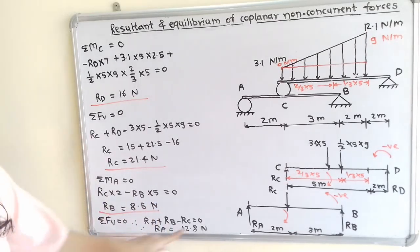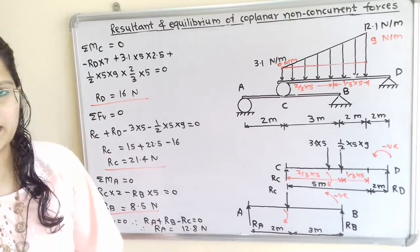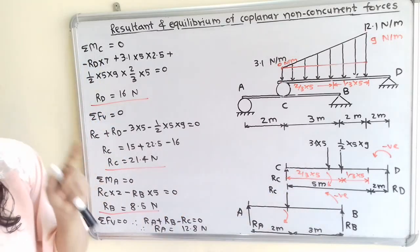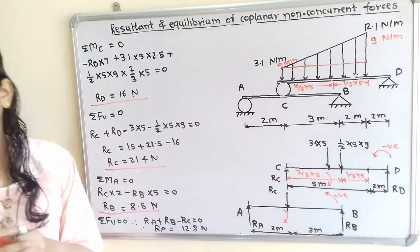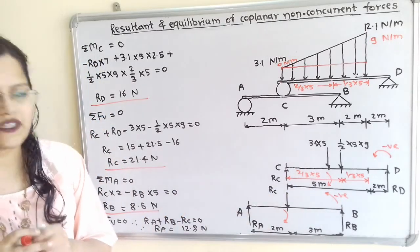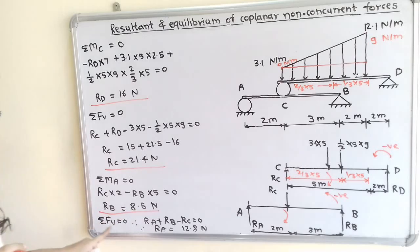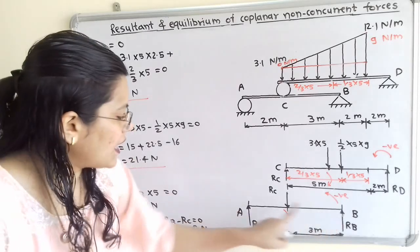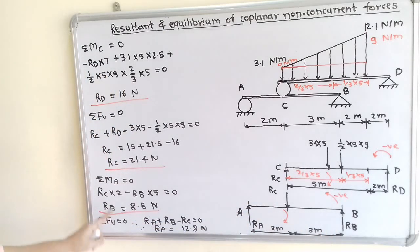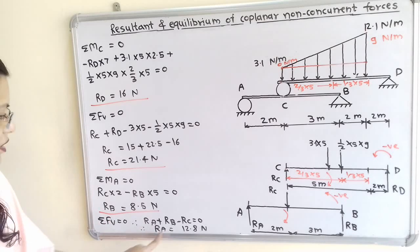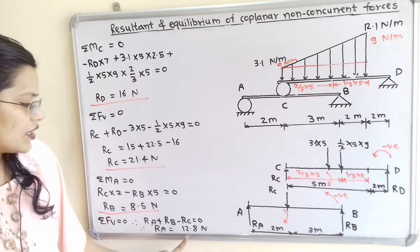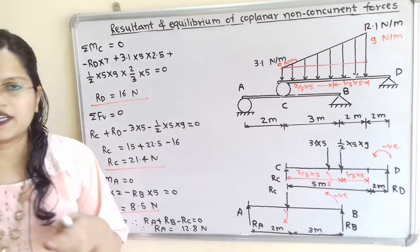Finally, for beam AB, taking the summation of all vertical forces equal to zero: RA + RB − RC = 0. With only one unknown, RA = 12.8 N.